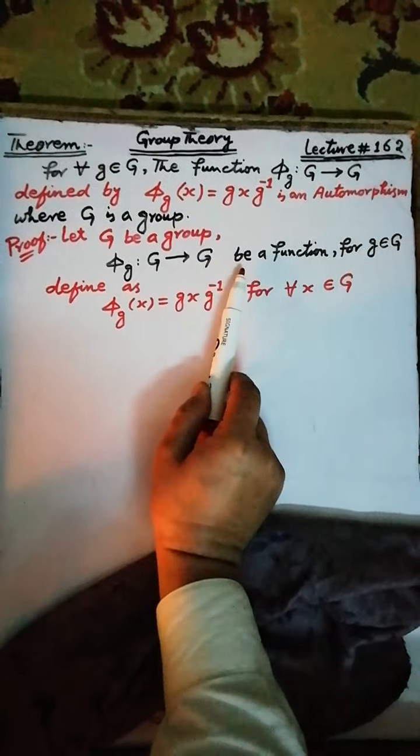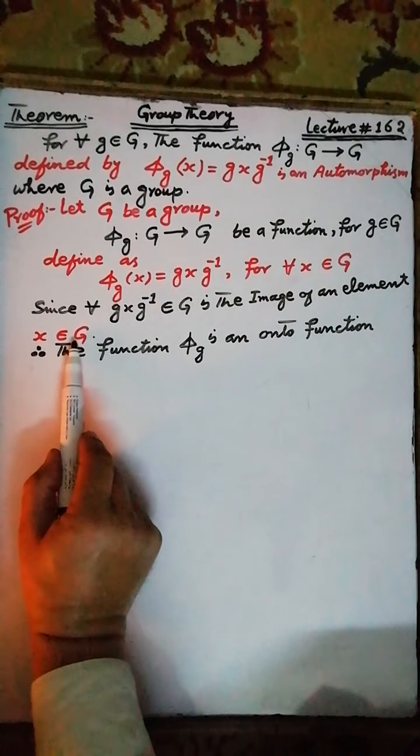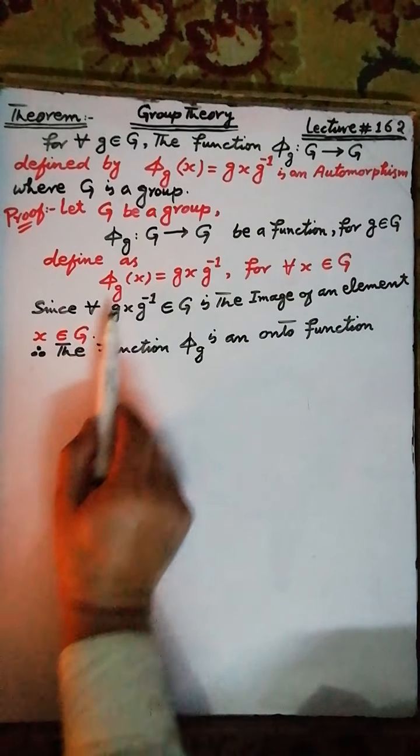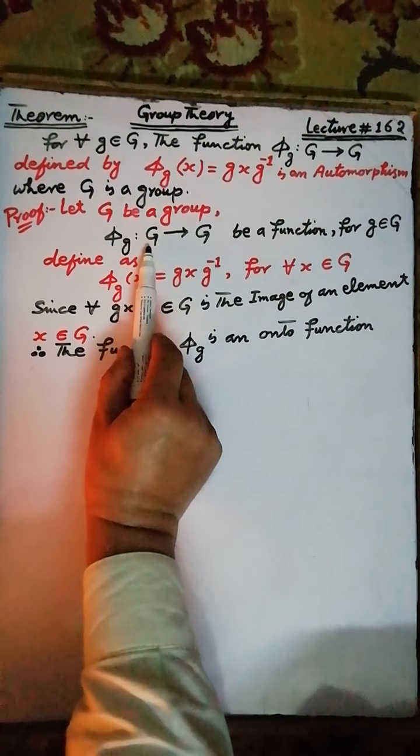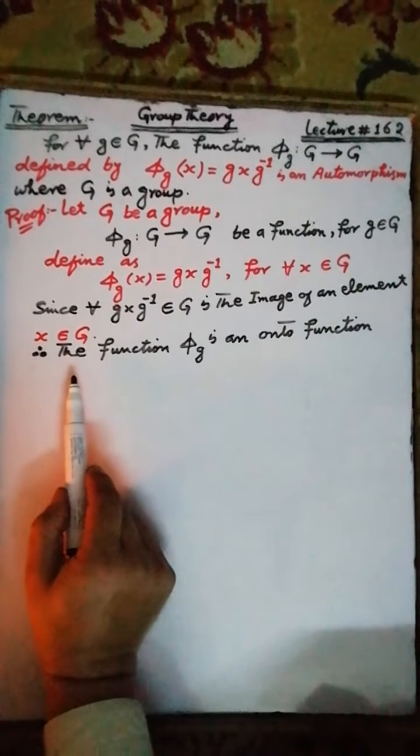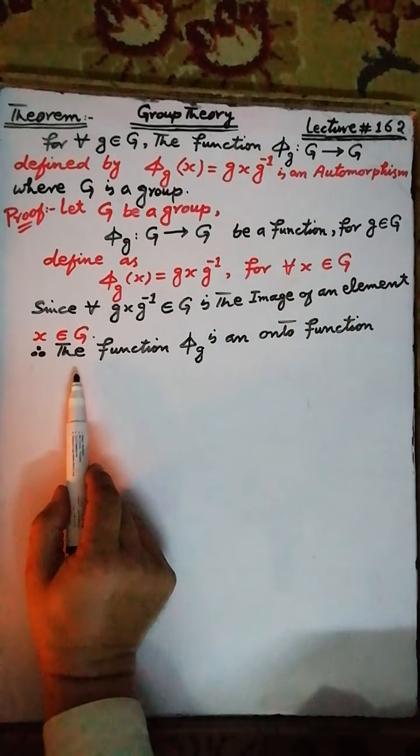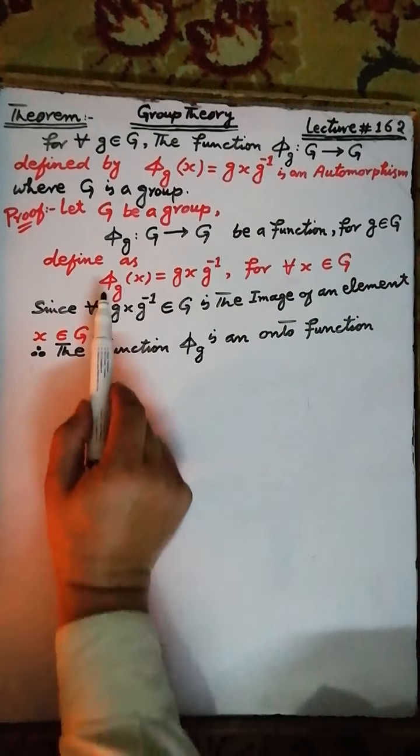Since each element gxg⁻¹ belongs to the group G, it is an image of an element x belonging to the group G. Therefore the function π(g) is an onto function.